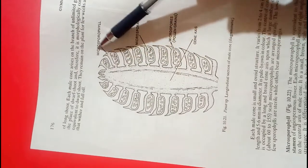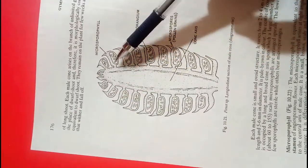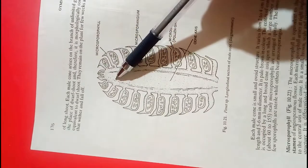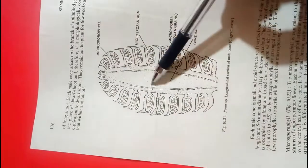Each microsporophyll arises at right angle to the central axis of the male cone—at 90 degrees.